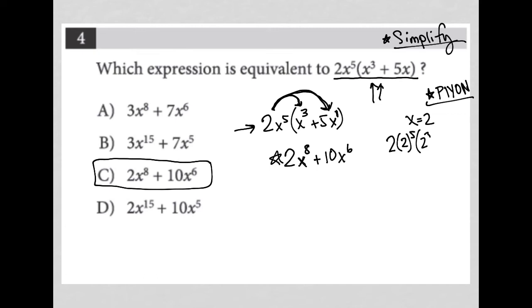parentheses, 2 to the third, plus 5 times 2. Just replaced all those x's with 2's. 2 to the fifth in your calculator will be 32. 32 times 2 is 64, so the number out here becomes 64. 2 cubed is 8, and 5 times 2 is 10, so 8 plus 10.